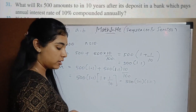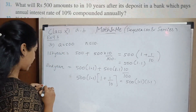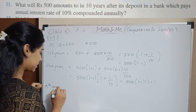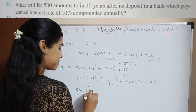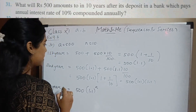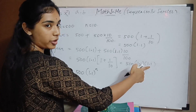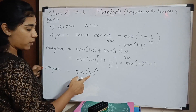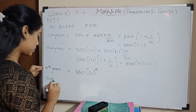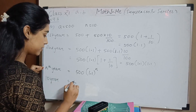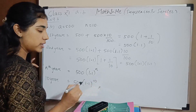At the end of the nth year, the amount will be 500 times 1.1 to the power n. For the first year you have 1.1, for the second year 1.1 squared, and for the nth year 1.1 to the power n. So at the end of 10 years, the value is 500 times 1.1 to the power 10.